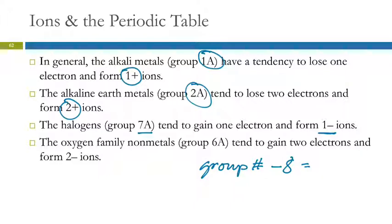The group number minus eight is the charge. It's the charge on the non-metal. Group 6A, six minus eight is negative two. They form negative two ions.